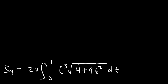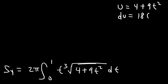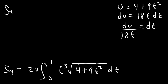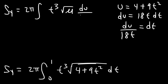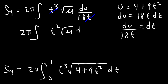Now we're going to use u-substitution again. Let's make u equal to 4 plus 9t². Therefore, du is going to equal 18t dt. Solving for dt, that's du divided by 18t. This becomes the square root of u times du over 18t. Notice that we can cancel a t, and we're left with t squared times the square root of u du.